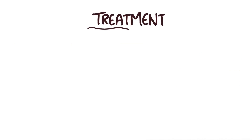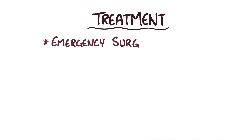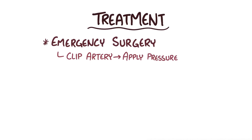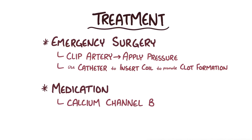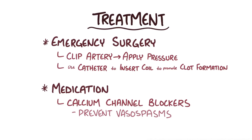Treatment of a subarachnoid hemorrhage typically involves emergent surgery. An artery that's bleeding can be surgically clipped to apply direct pressure to it. Alternatively, a catheter can be used to place a coil in an aneurysm, which serves as a site for clot formation and also seals up the aneurysm. Sometimes medications like calcium channel blockers can be used to help prevent arterial vasospasm from setting in.